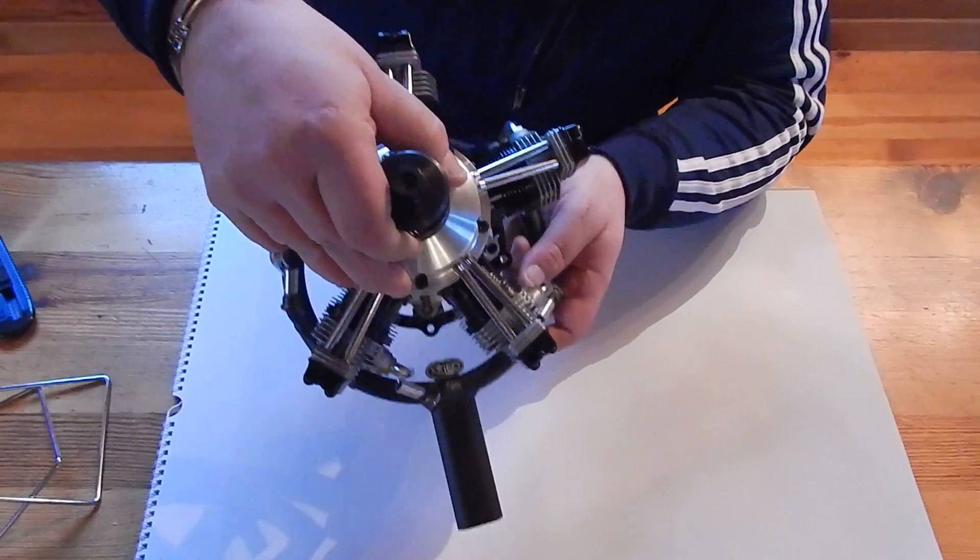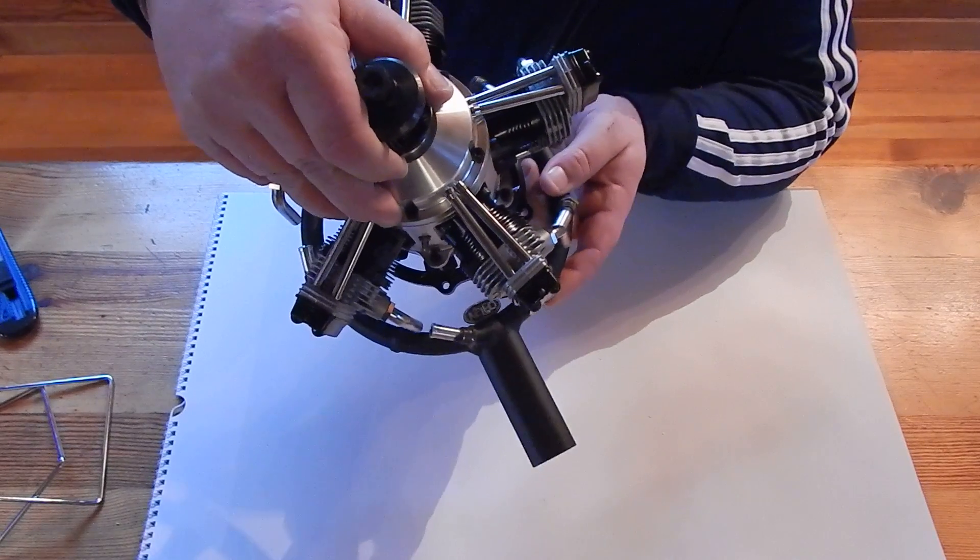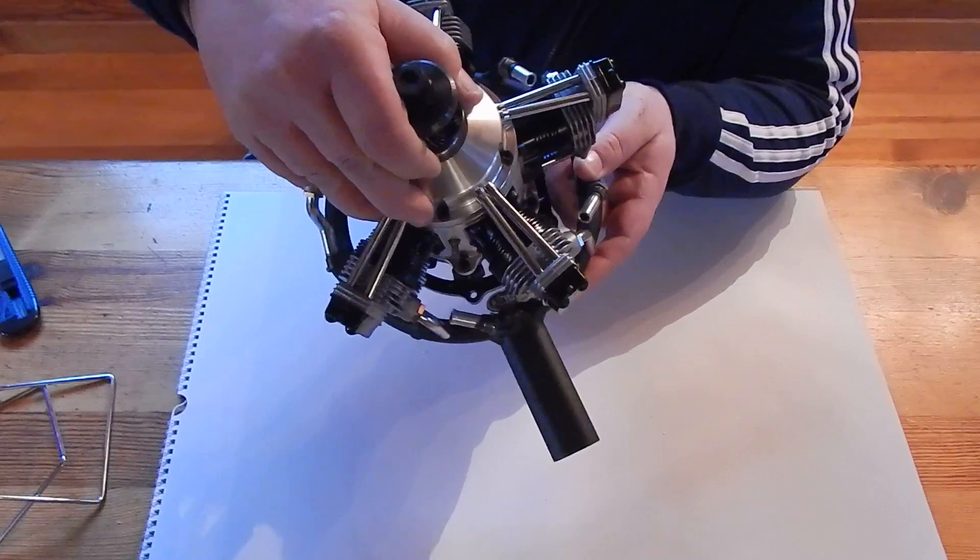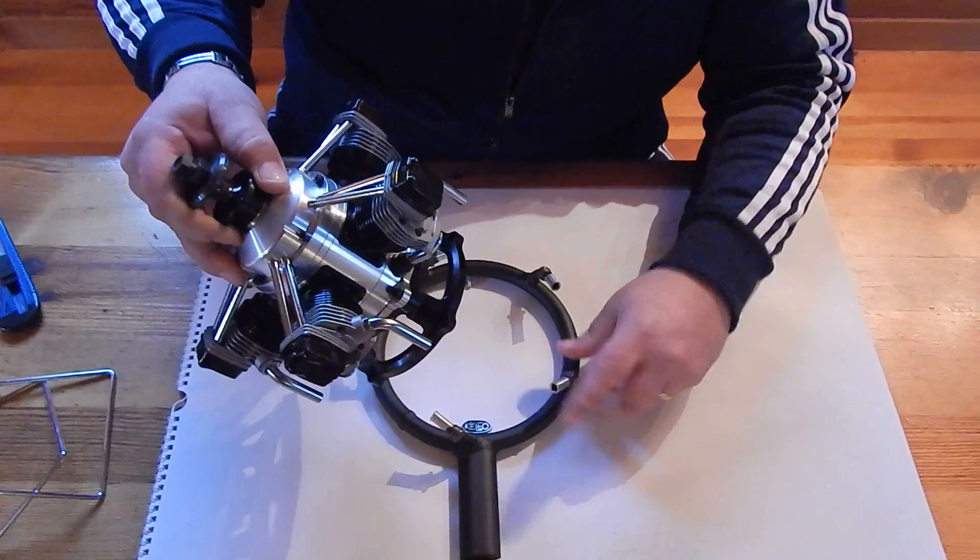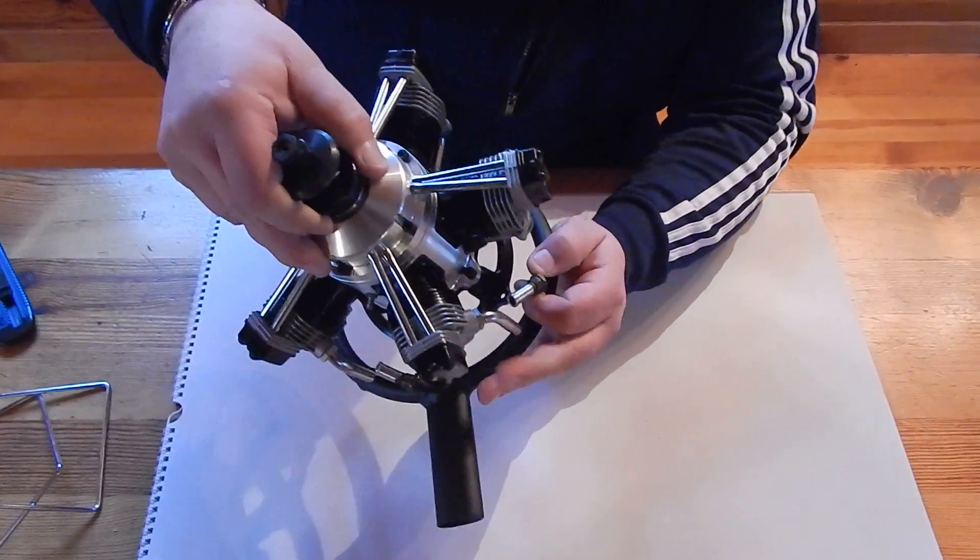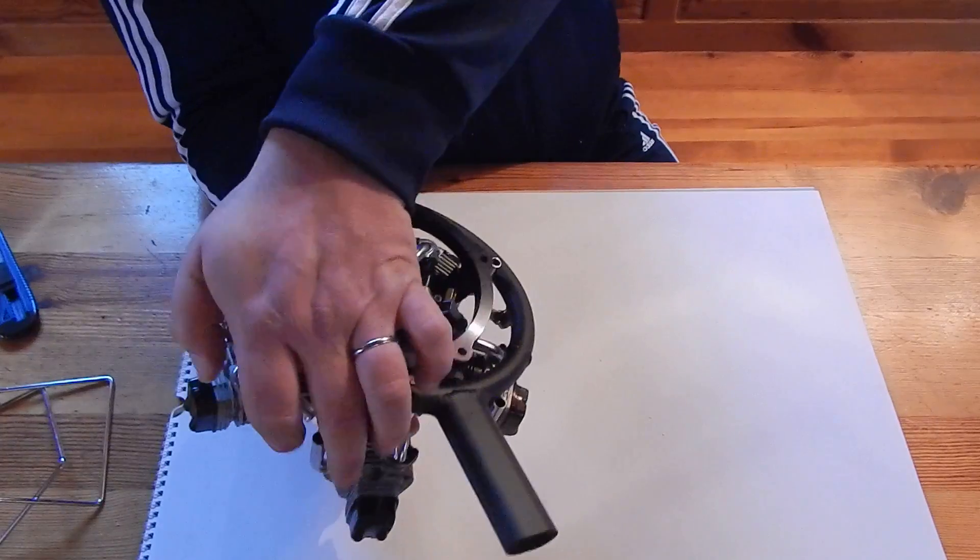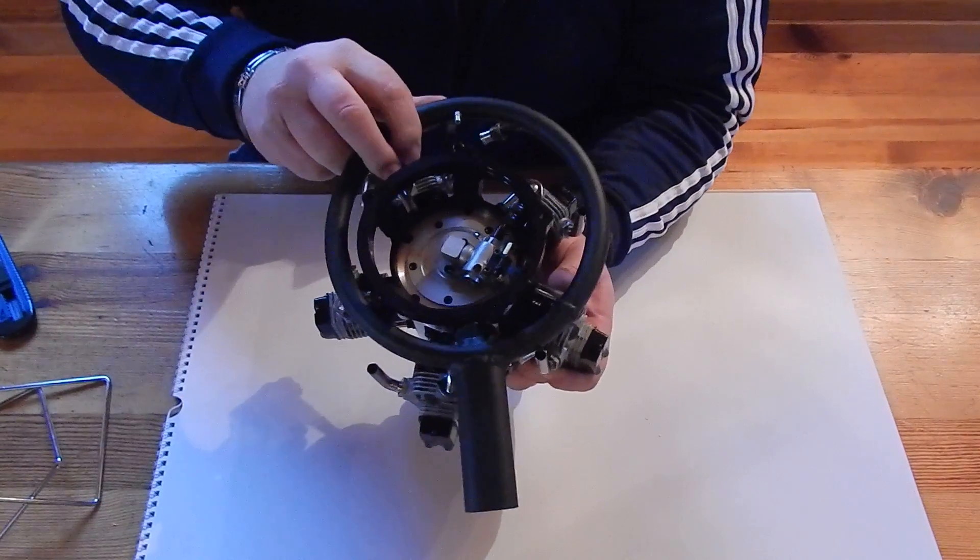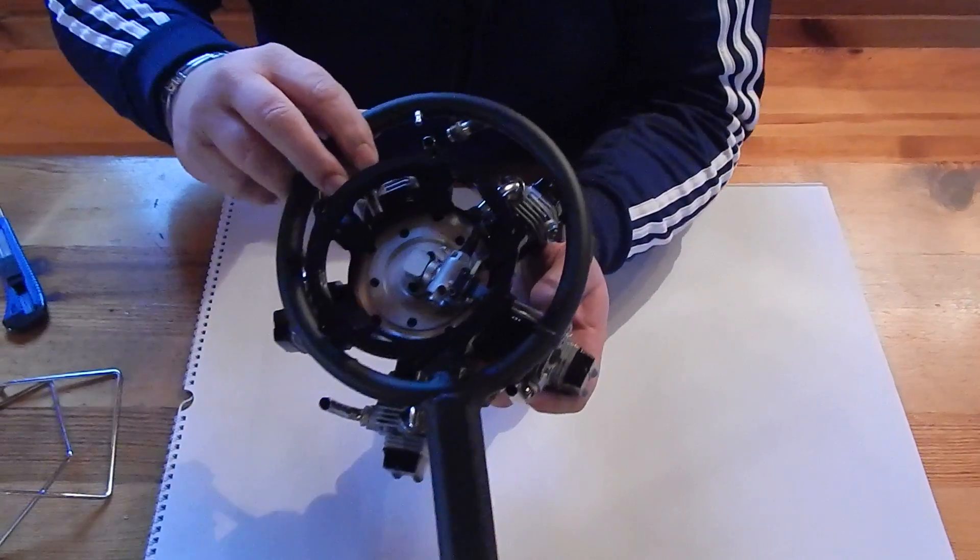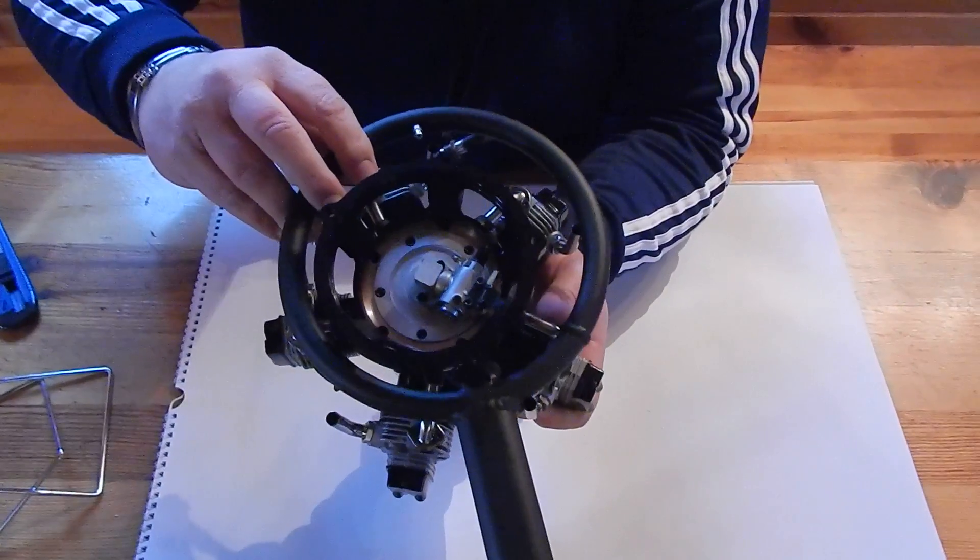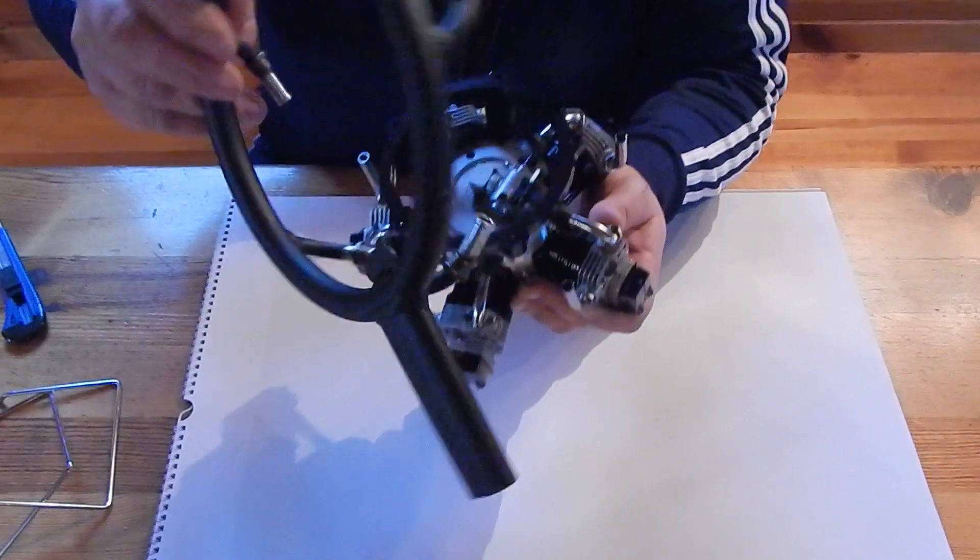It will go something like this. Now you have to take these tubes out and mount this exhaust on the engine. I think that now you can see already it will fit perfectly on the engine.